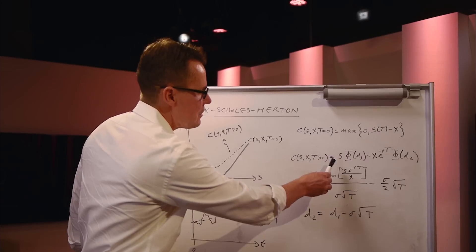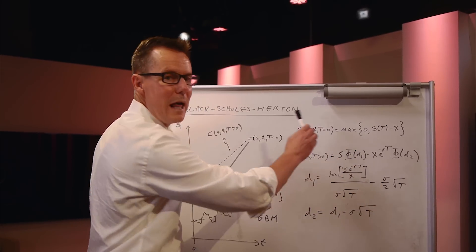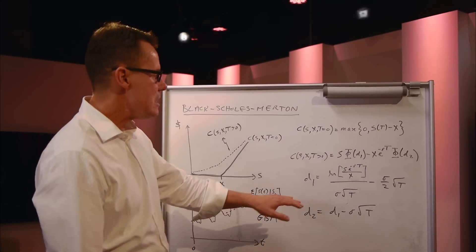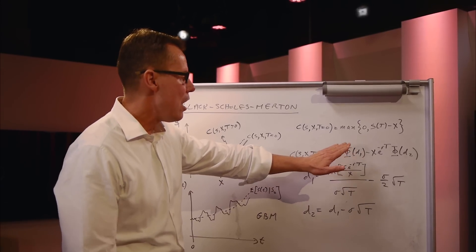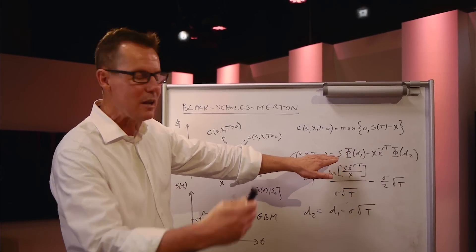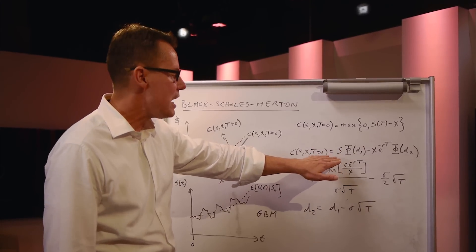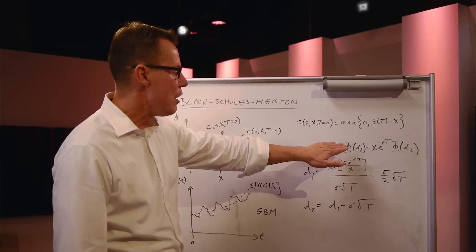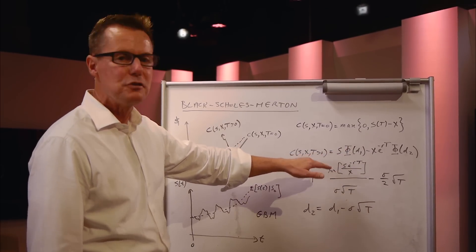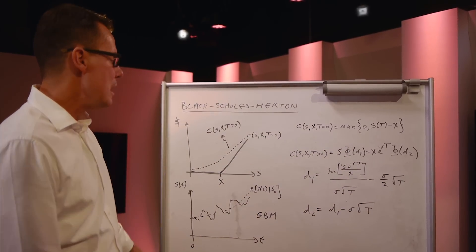It turns out that this first term in the formula, the so-called Black-Scholes formula, is just the expected present value of the stock, the underlying security, based on the value of the stock today, and assigning a value of zero to all the values for the stock which happen to lie below the strike.